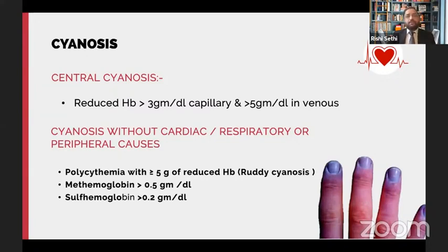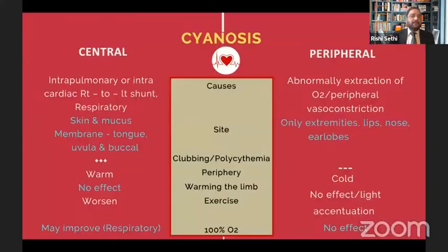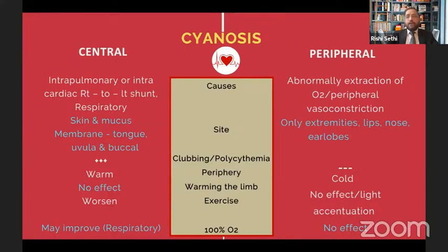There are causes of cyanosis without cardiac and respiratory diseases. The first question the examiner would ask is whether cyanosis is central or peripheral. Causes of central cyanosis are cardiac, respiratory, and abnormal hemoglobin; it is detected at central sites - tongue, uvula, buccal mucosa. Peripheral cyanosis is due to peripheral vasoconstriction or abnormal oxygen extraction, detected only in extremities or earlobes. Clubbing and polycythemia are present in central cyanosis, absent in peripheral. Limbs are warm in central, cold in peripheral cyanosis. Exercise worsens central cyanosis, and 100% oxygen may improve respiratory-origin central cyanosis but not cardiac-origin; it has no effect on peripheral cyanosis.